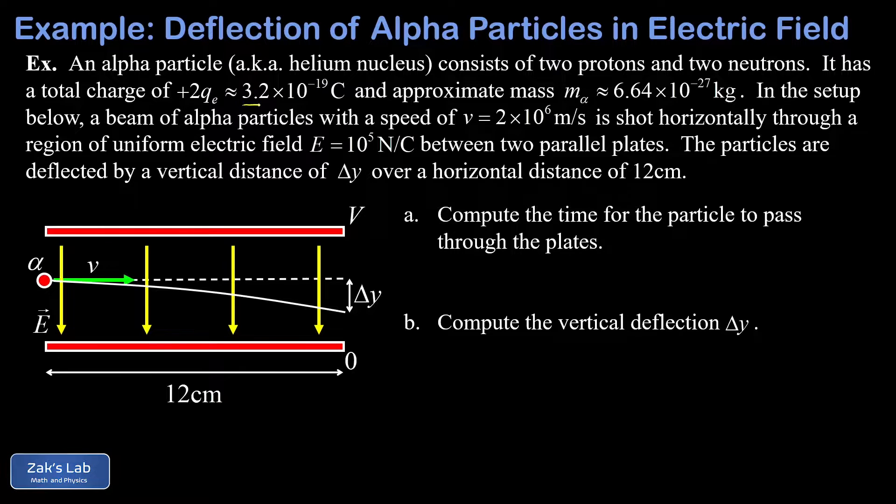So our approximate charge on these particles is 3.2 times 10 to the negative 19 coulombs. We're given the approximate mass of the alpha particle as 6.64 times 10 to the negative 27 kilograms.